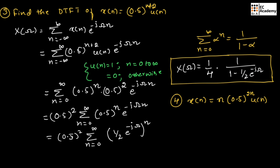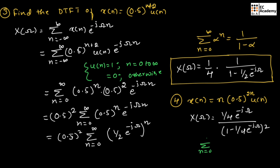Take this as an assignment question. The final answer you should get is X of omega equal to one-quarter exponential to the power of minus j omega divided by 1 minus one-quarter exponential to the power of minus j omega, whole squared. You can use the formula summation of n from 0 to infinity of n times alpha to the power of n equals alpha divided by 1 minus alpha whole squared to solve this. This concludes the problems on DTFT.